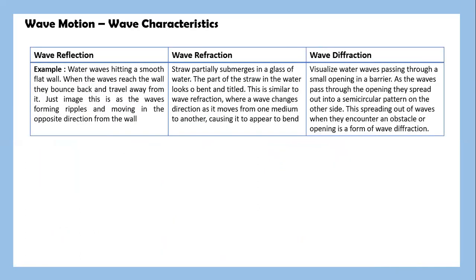Let's look into wave characteristics. Wave reflection. Example given here is a water wave hitting a smooth flat wall. When the wave reaches the wall, they bounce back and travel away from it. Just imagine this as the wave forming ripples and moving in the opposite direction from the wall.